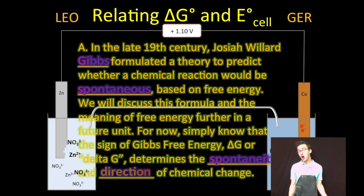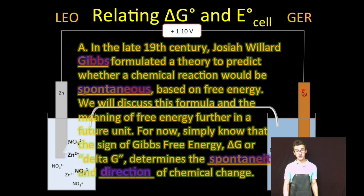Now at this point, all I want you to be able to do is recognize what Delta G tells us about the spontaneity or thermodynamic favorability of a redox reaction. There's a lot more to Gibbs free energy that we'll talk about in a later unit. But for now, just take what I'm saying at face value.